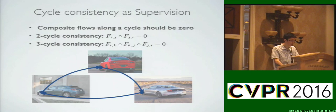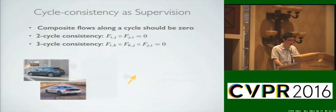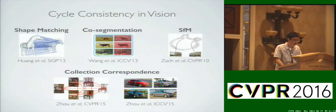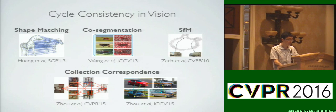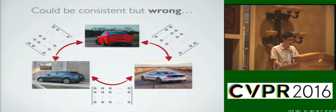Here is an example of cycle consistency. Our insight is to notice that cycle consistency is a type of supervisory signal. However, flows that are cycle consistent but wrong do not provide a useful supervision signal.